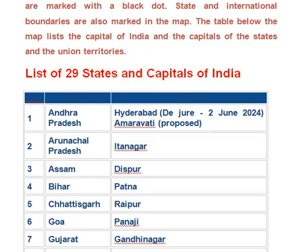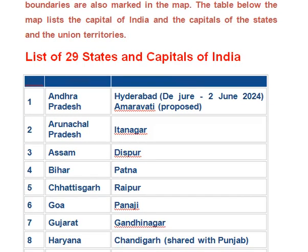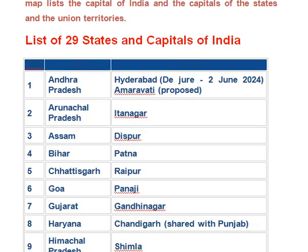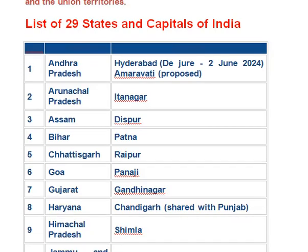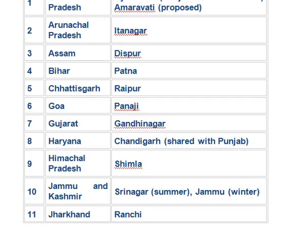Arunachal Pradesh — Itanagar. Assam — Dispur. Bihar — Patna. Chhattisgarh — Raipur. Goa — Panaji. Gujarat — Gandhinagar. Haryana — Chandigarh. Himachal Pradesh — Shimla. Jammu and Kashmir — Srinagar.